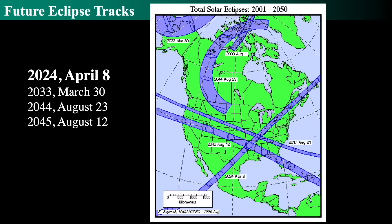The 2033 one is only in Alaska. The 2044 one is mostly in northern Canada, so you'll have to take a trip — and unfortunately it'll probably be cloudy. You'll just have to wait until 2045, about 21 years from the time of this recording, to get another one that passes straight across the United States.